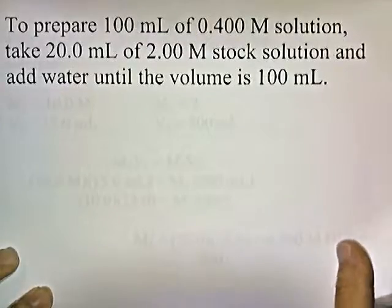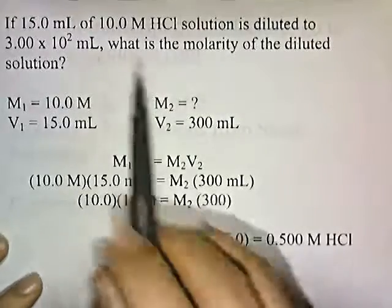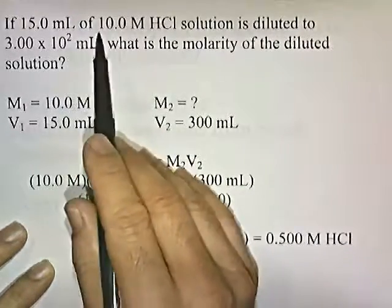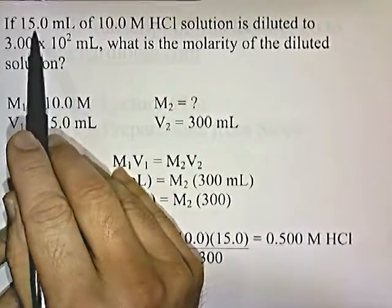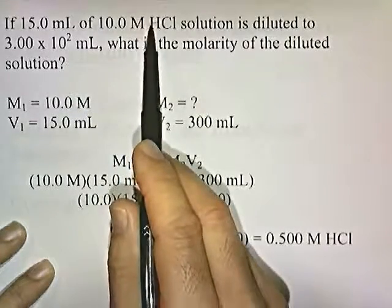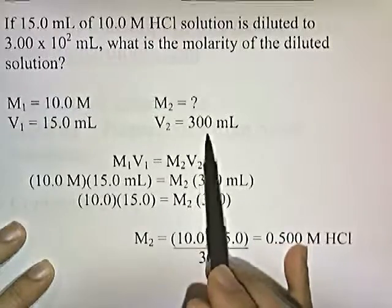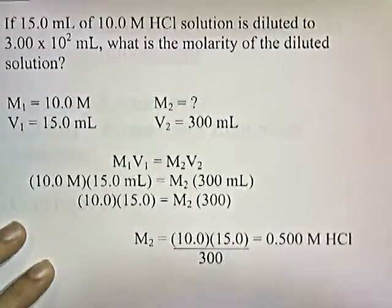Let's try another problem. If 15 milliliters of 10 molar HCl solution is diluted to 3 × 10² milliliters, what is the molarity of the diluted solution? Let's figure out what they give us and what they ask for. 15 milliliters of 10 molar — this is the concentrated stock solution, so M1 is 10. They tell us how much stock solution we're using, so V1 is 15. We've added water until the diluted solution is 300 milliliters, so V2 is 300. We want to know the new concentration after we've added water — we're solving for M2.